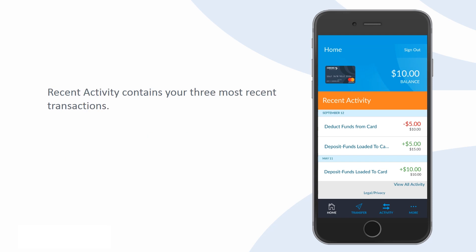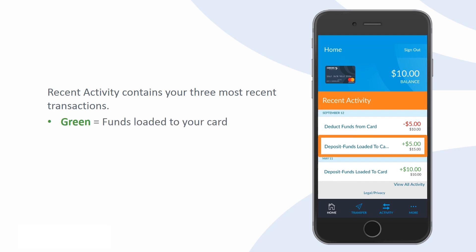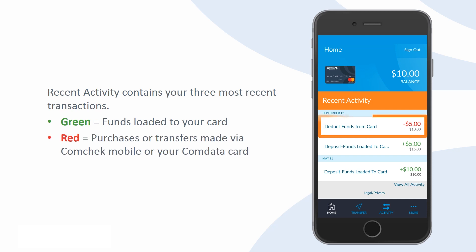The Recent Activities section contains your three most recent transactions. Amounts in green represent funds that were loaded to your card. Amounts in red represent purchases or transfers made by you via the mobile app or your ComData card.